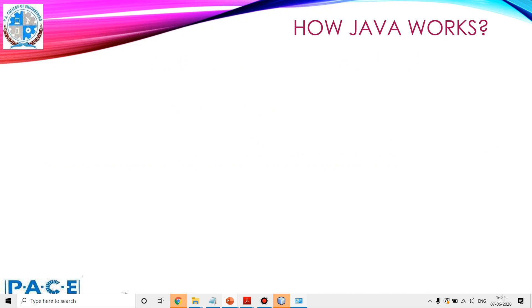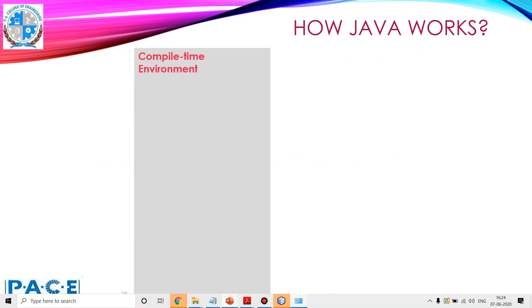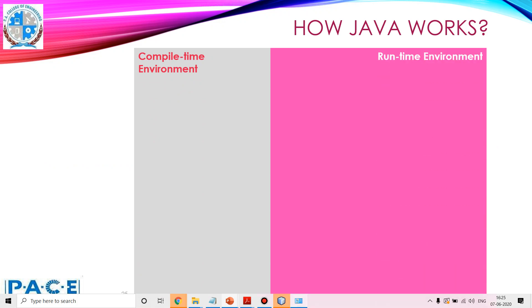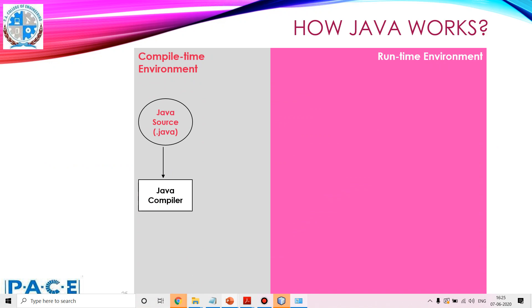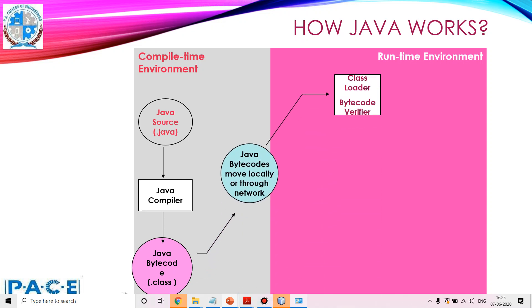How does a Java program execute? When we run a Java program, there are two kinds of environments: one is the compile-time environment and the other is the runtime environment. In the compile-time environment, we write the Java source code file — the .java file — which is input to the Java compiler. The Java compiler produces the Java bytecode in the form of a .class file. In order to run this, the class file needs to be loaded into the runtime environment.